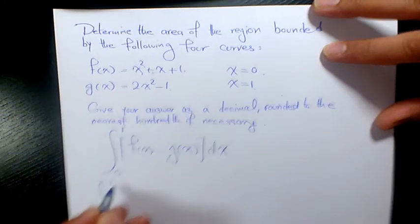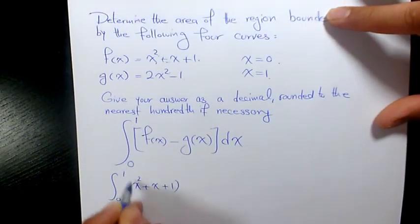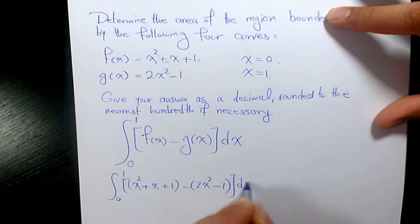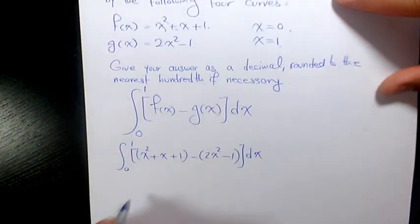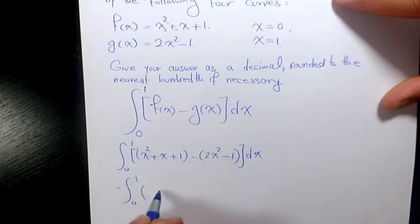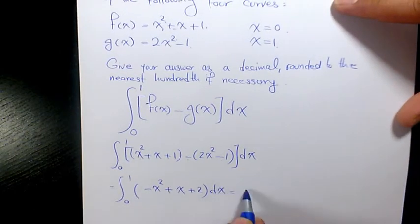Which will be x squared plus x plus 1 minus 2x squared minus 1. This will be x squared minus 2x squared is going to be negative x squared plus x, and 1 minus negative 1 is going to be 1 plus 1, which is 2.